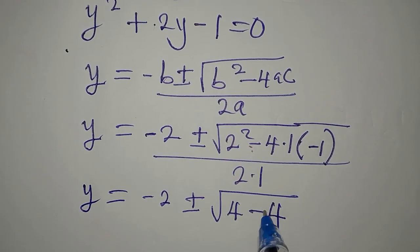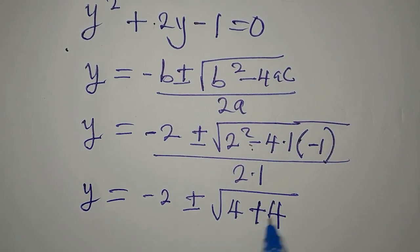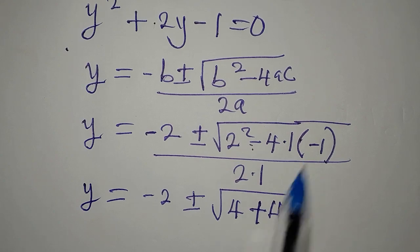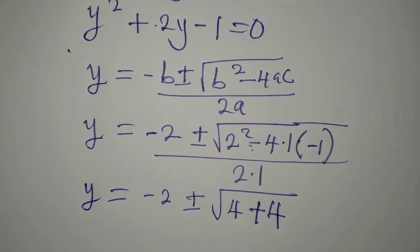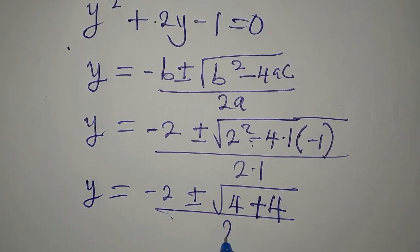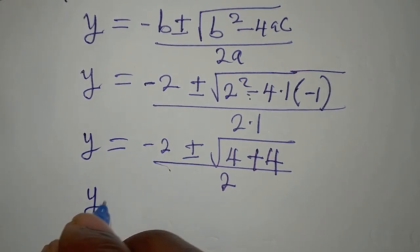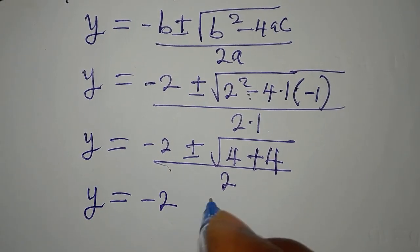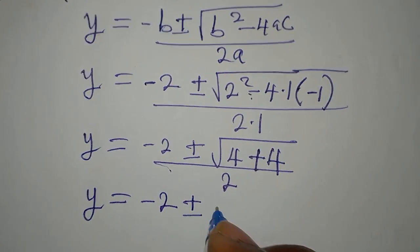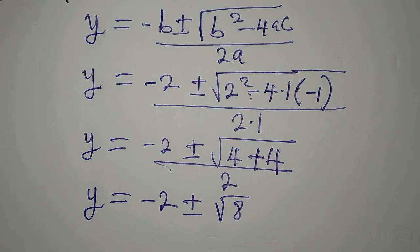We have 4, 2 squared is 4, 4 times 1 times minus 1 is going to give us 4. By the way, this is supposed to be positive, right, because negative negative is positive.